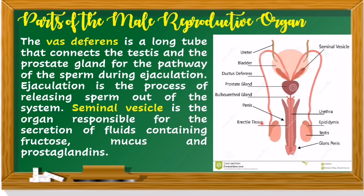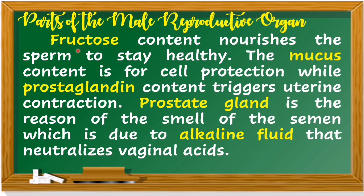The fructose content nourishes the sperm to stay healthy. The mucus content is for cell protection, while the prostaglandin content triggers uterine contraction. The prostate gland is responsible for the smell of semen, which is due to alkaline fluid that neutralizes vaginal acids.